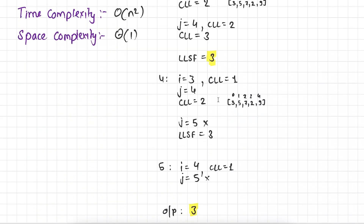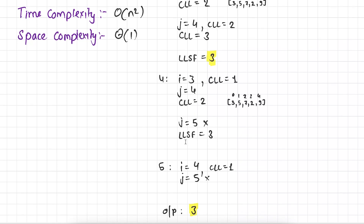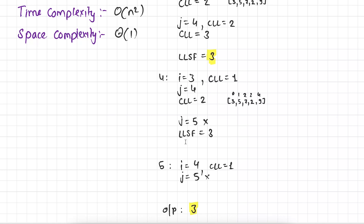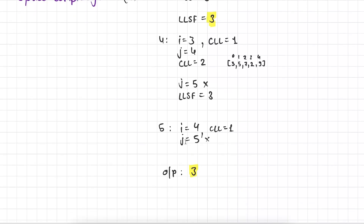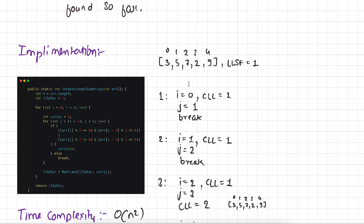We move to i=3 where we initialize CLL to 1 and j=4. We compare 2 and 9 — it satisfies the condition so CLL becomes 2. Then j=5 is not a valid index so we exit the loop. Comparing with longest_length_so_far which is 3, it is the maximum so we keep it. For i=4, j=5 is again not valid so we exit immediately. Finally, 3 gets printed on the screen — the maximum even-odd subarray present in this array is 3, formed by elements 7, 2, and 9.